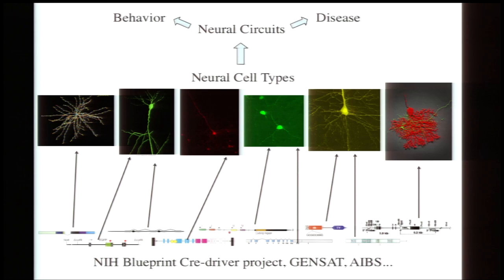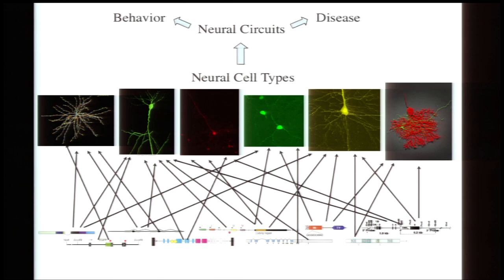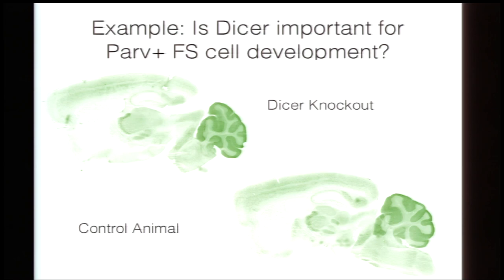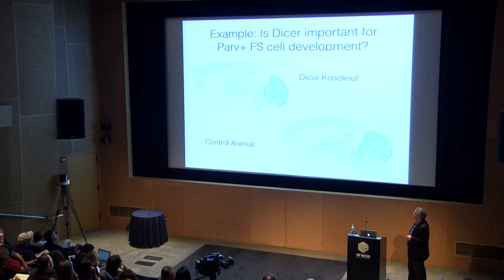This has been a tremendously fruitful approach. But it's useful to have a complementary strategy, because actual cell types are defined by the intersection of many different genes, and any given gene is quite pleiotropic and expressed in many cell types. A quick example came from trying to study the role of microRNAs: the enzyme DICER is critical in the biogenesis of microRNAs and in the late development and phenotypic maintenance of fast-spiking basket cells.